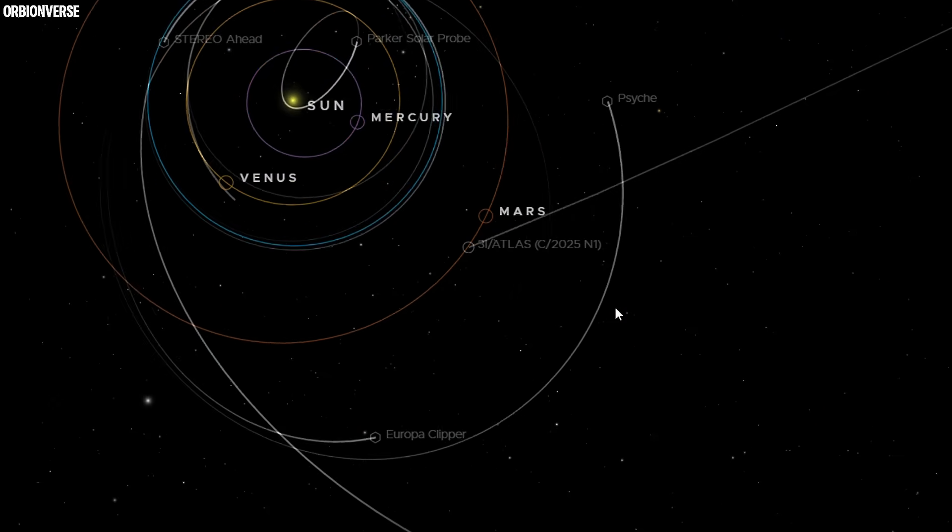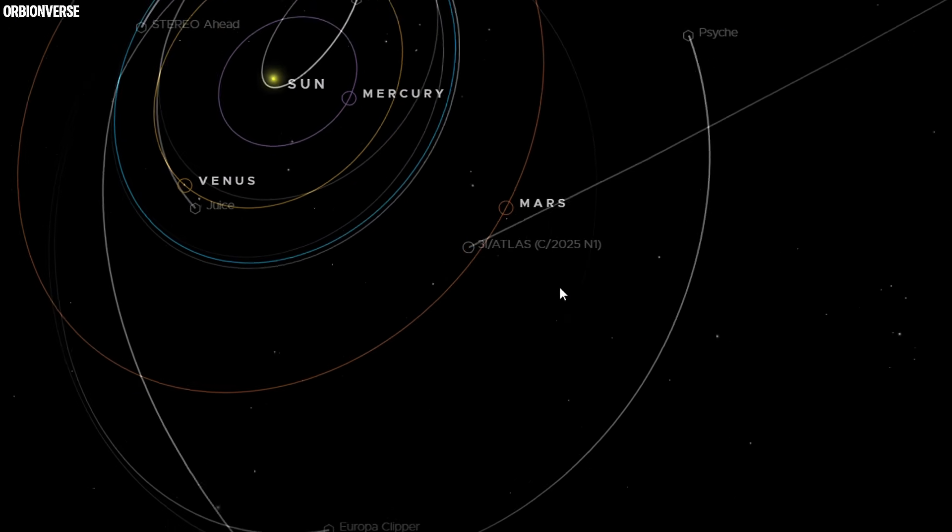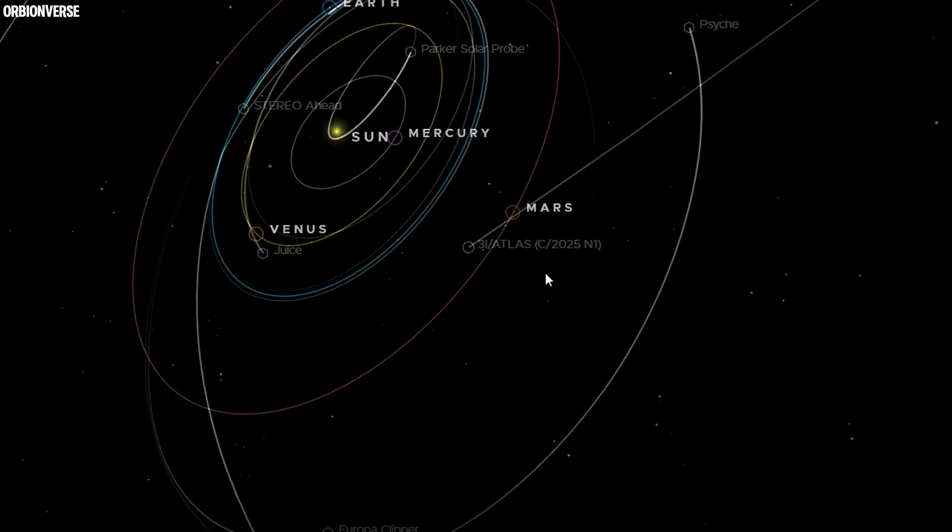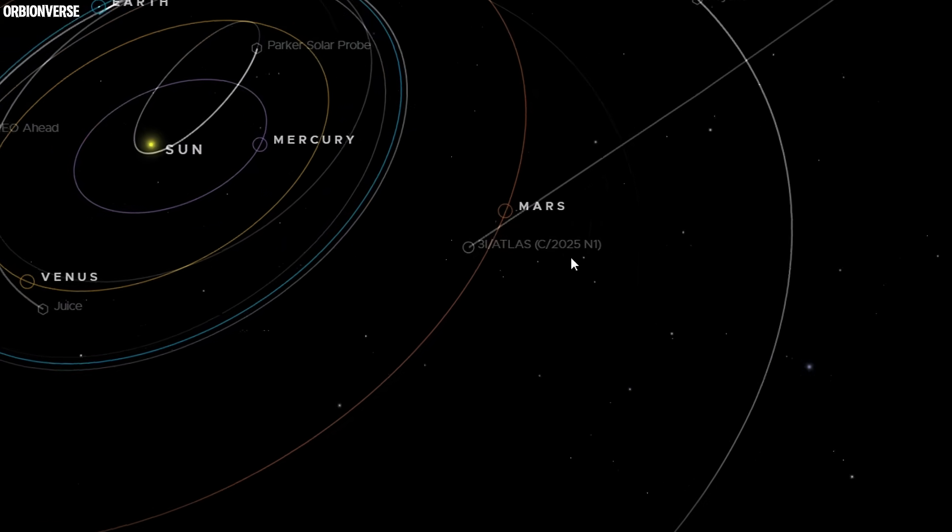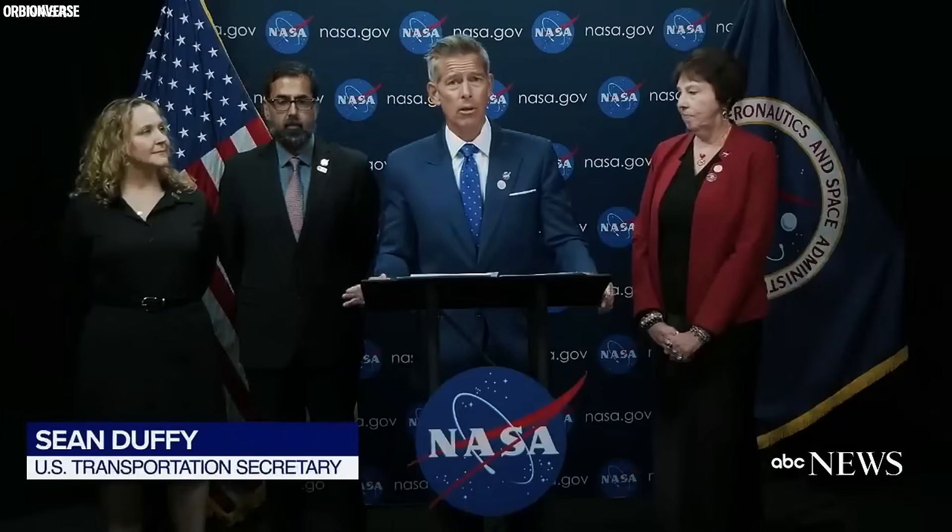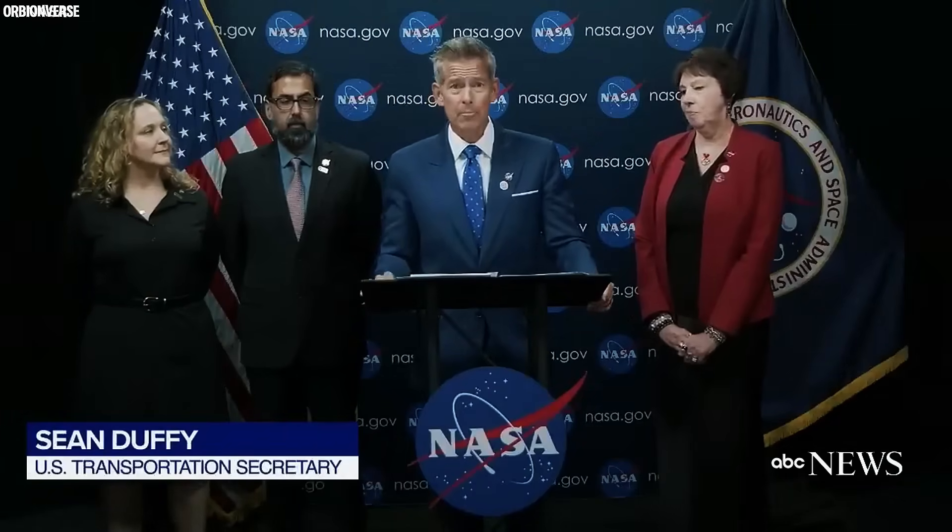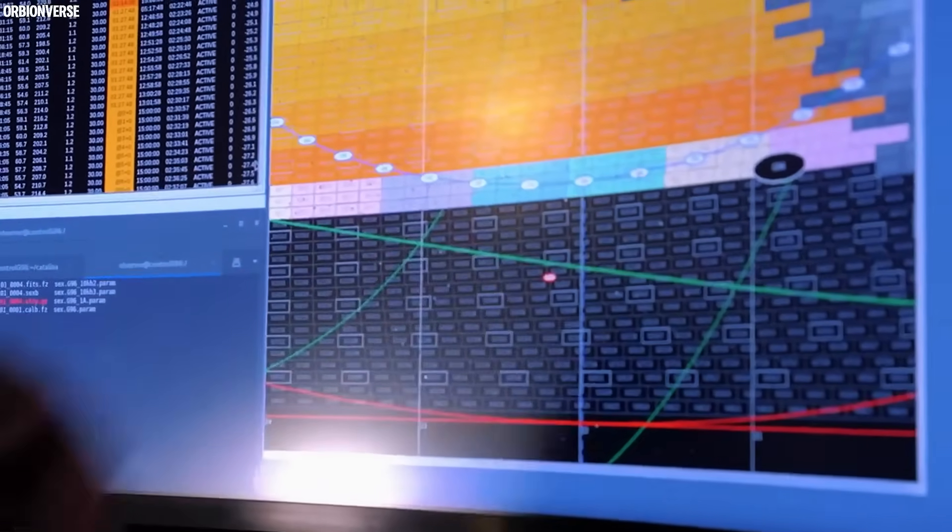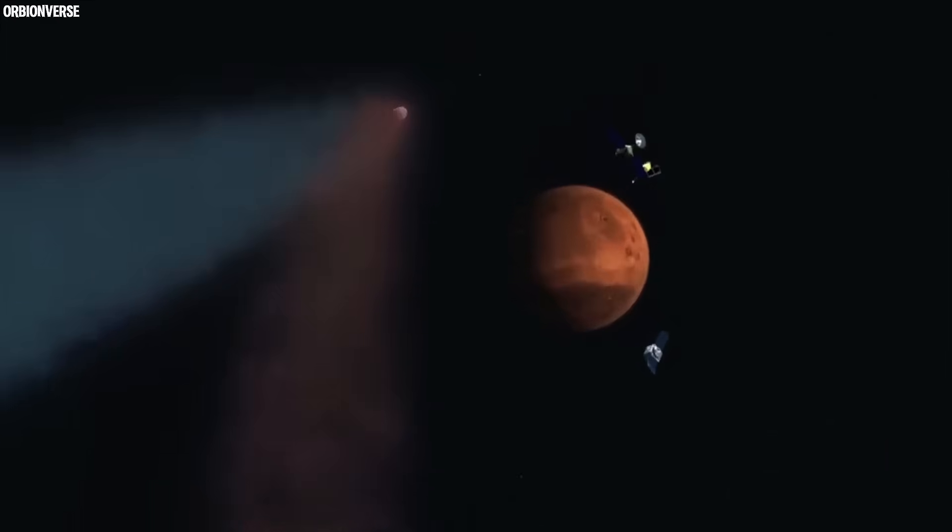A fractional shift, just four ten-thousandths of a degree, yet enough to alter its exit path through the inner system. That's impossible for a natural body, unless something inside was steering. Officially, NASA called it non-gravitational acceleration. Unofficially, leaked transcripts used a different phrase: intentional drift.